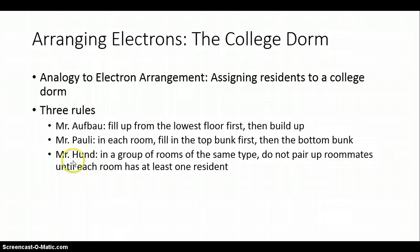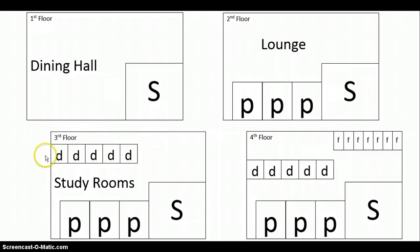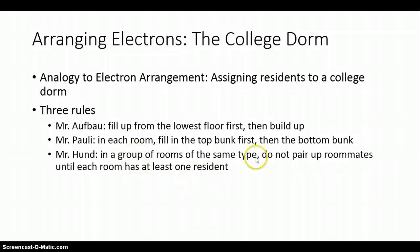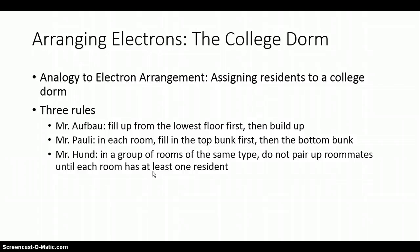The last rule, Mr. Hund says that in a group of rooms of the same type, for example in a group of these rooms right here of the same type, do not pair up roommates until each room has at least one resident. One resident in each room first. Therefore, you will see this pattern happen. I'm going to pause here for just a moment and I want you guys to pick up where I leave off.